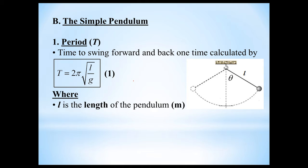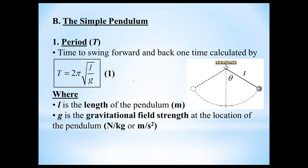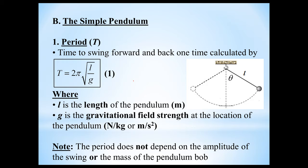In this equation, L is the length of the pendulum. G is your gravitational field strength, or the magnitude of the acceleration due to gravity at the location of the pendulum. That can be expressed in units of newtons per kilogram, or meters per second squared. I do want to note what the period does not depend on: it doesn't matter what the mass of the pendulum bob is, and the amplitude of the swing also does not matter.